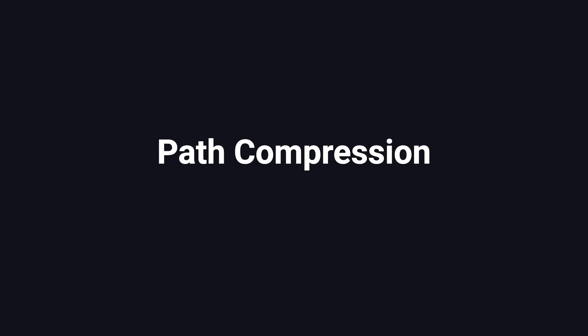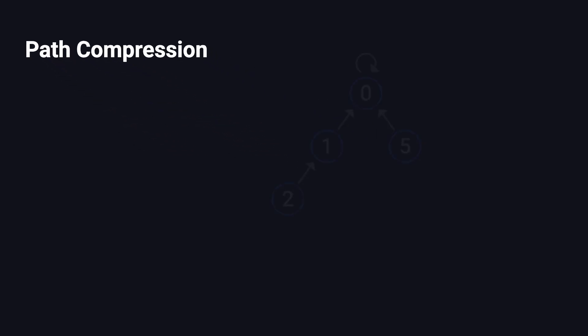So, what exactly is path compression? Let's quickly review how the find operation works. In the basic version, when you search for the root of a node, you follow the parent link step-by-step until you reach the root. But if the tree is deep, this can take a lot of steps. Path compression improves this process by flattening the tree as you search. While moving up toward the root, you make each node you pass point directly to the root. Afterward, the path from any node to the root becomes much shorter.